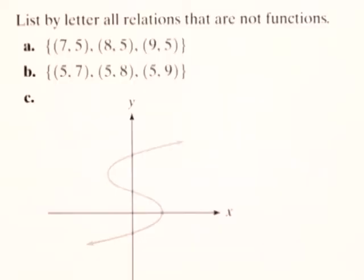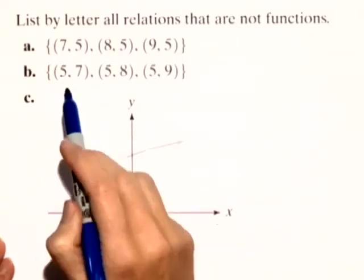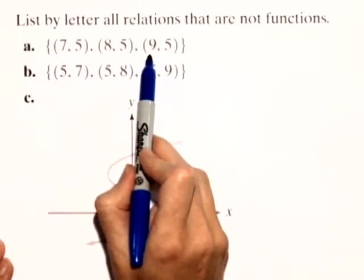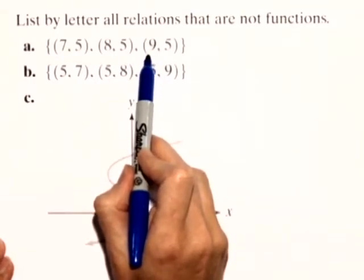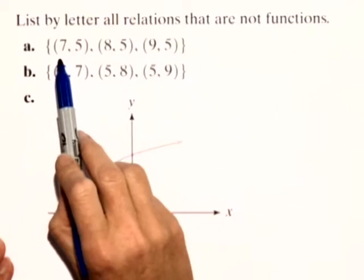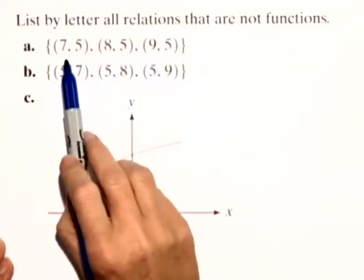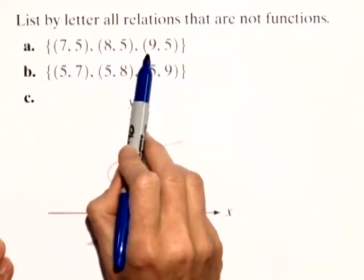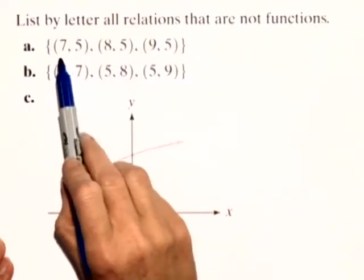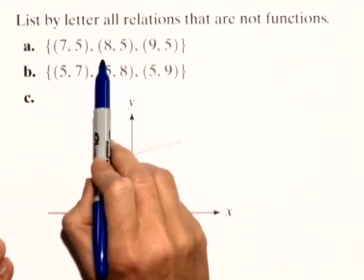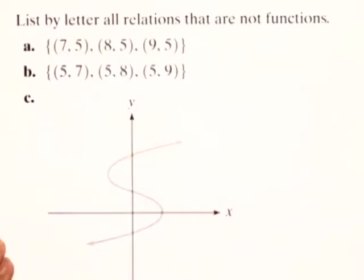So let's start with A. In A, we have a set of three ordered pairs. Now how do we determine whether or not these ordered pairs represent a function? Well, here's the key. We look at the first elements: 7, 8, and 9. If no first element is repeated, then it automatically is a function because we cannot have any first element paired with a second element and then have that same first element paired with a different second element. So A represents a function, so we're not going to list that.